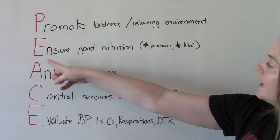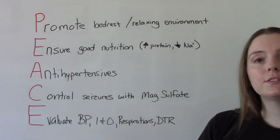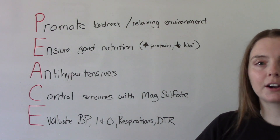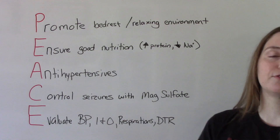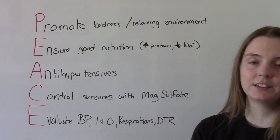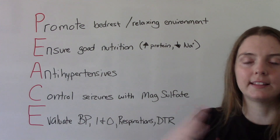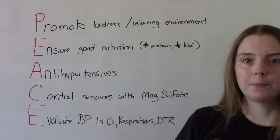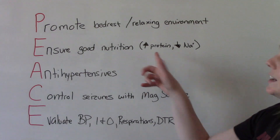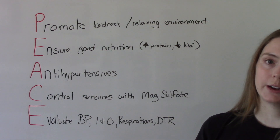E is to ensure good nutrition. With preeclampsia, hallmark signs aside from high blood pressure include protein in the urine and edema — lots of swelling. To help with those issues, we want to increase protein in the diet and decrease sodium.